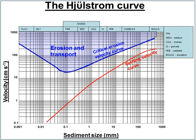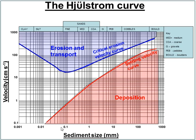The settling velocity curve has a more natural curve in that larger sediments can be deposited even at high velocities. So these boulders here would be deposited at approximately 200 centimetres per second, whereas this sand here would be deposited at around 6 centimetres per second. The section in the middle is the transport section — transport in suspension for the smaller sediments, and transport as bed load for the larger.